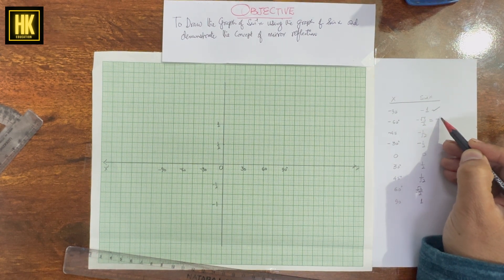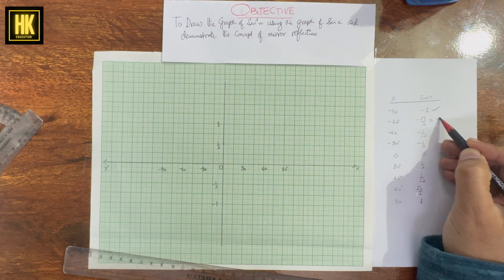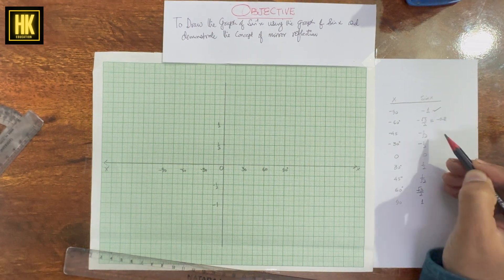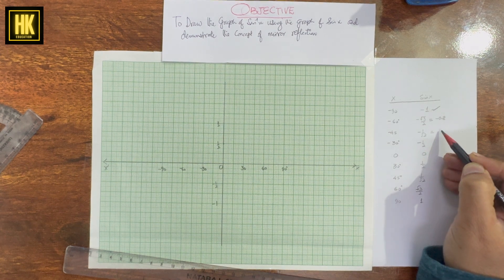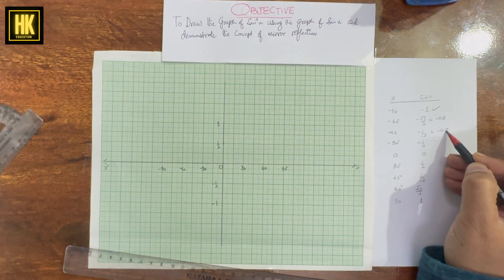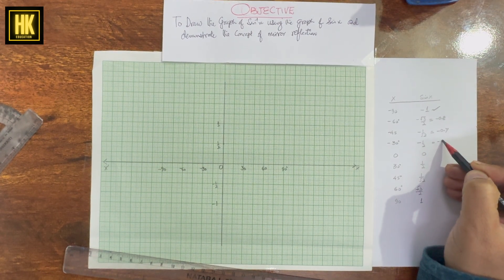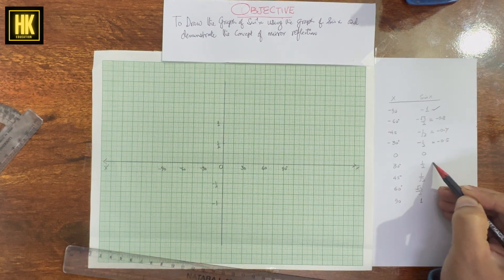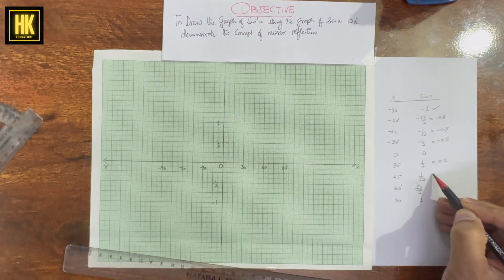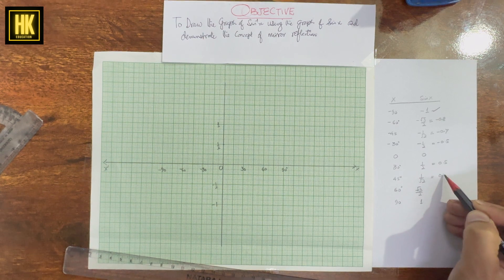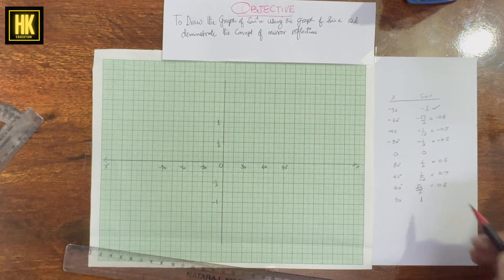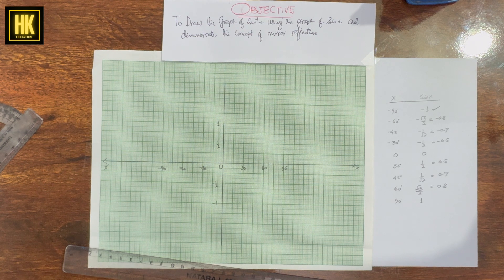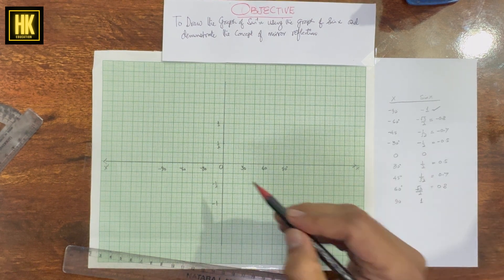In approximate decimal values: −√3/2 is approximately −0.8, −1/√2 is −0.7, −1/2 is −0.5, then 0, 0.5, 0.7, 0.8, and 1.